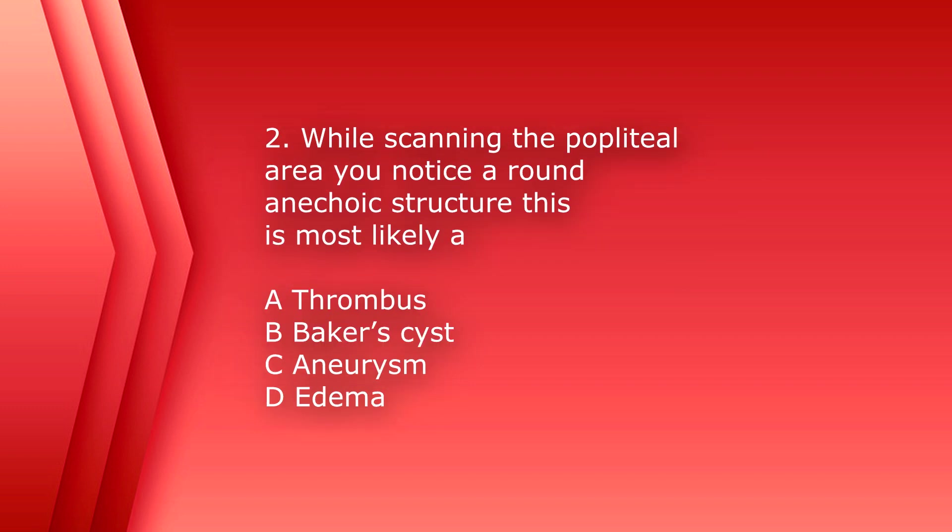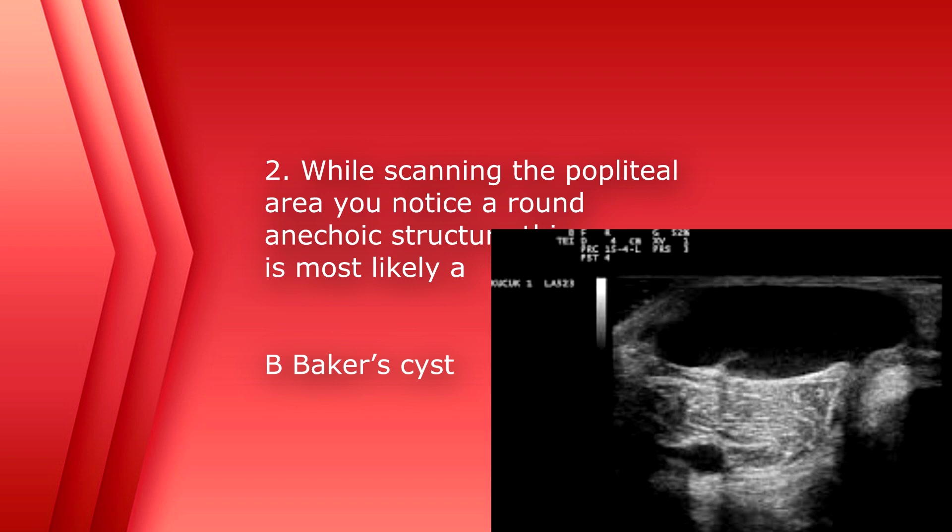Number two. While scanning the popliteal area, you notice a round anechoic structure. This is most likely A, thrombus, B, Baker cyst, C, aneurysm, or D, edema. The answer is B, Baker cyst.